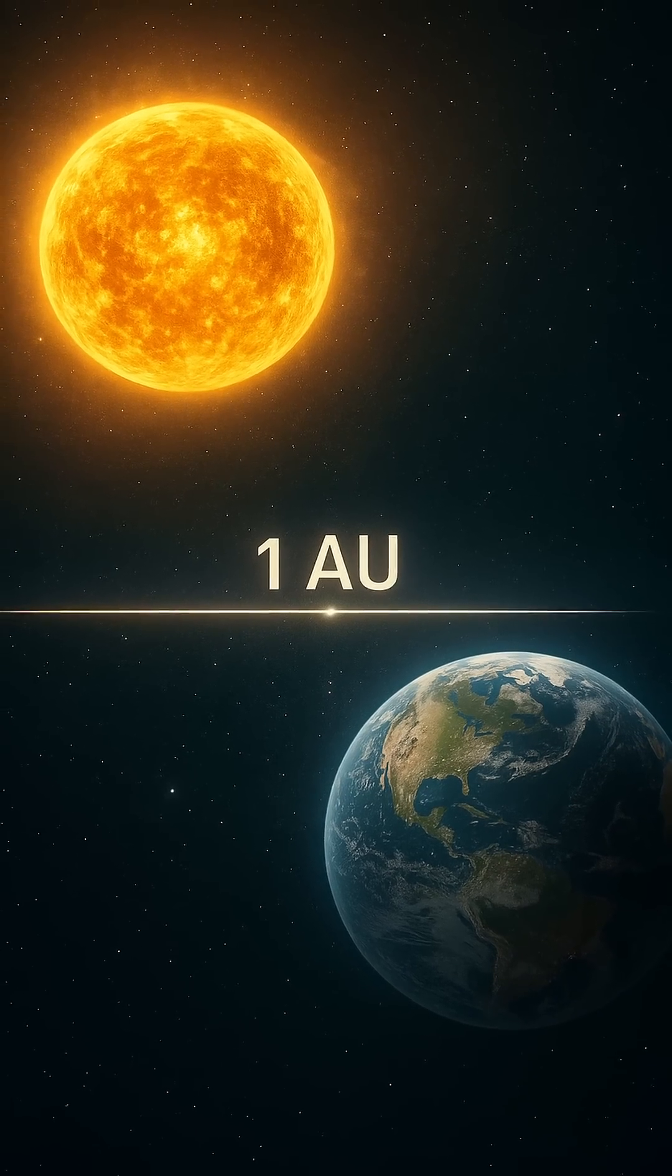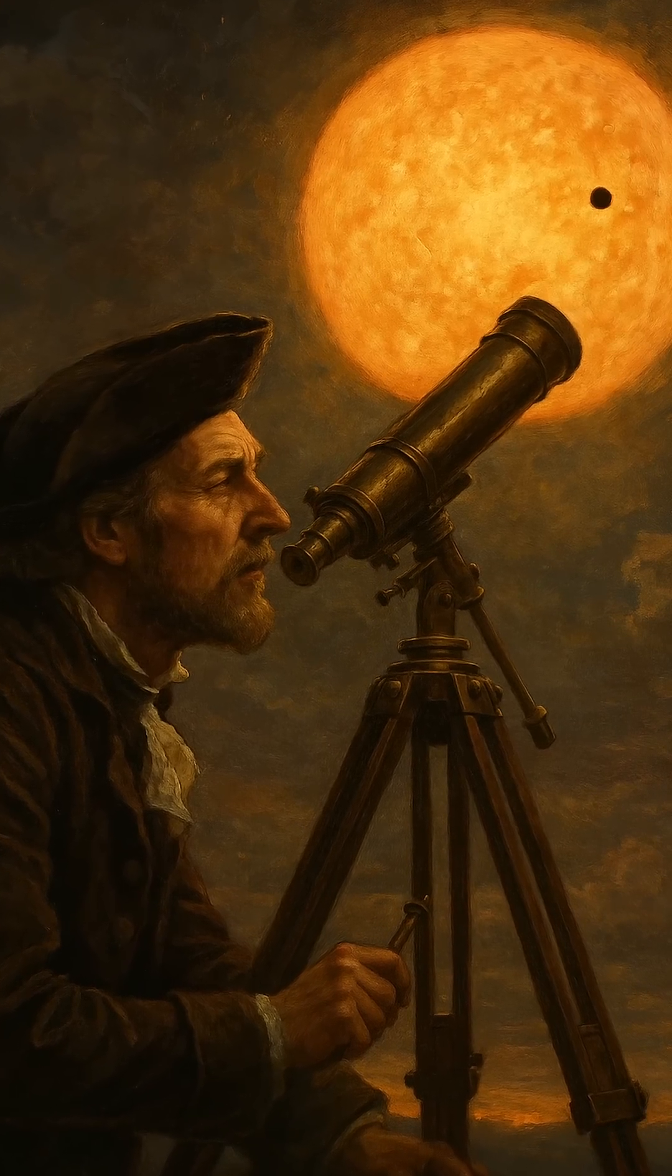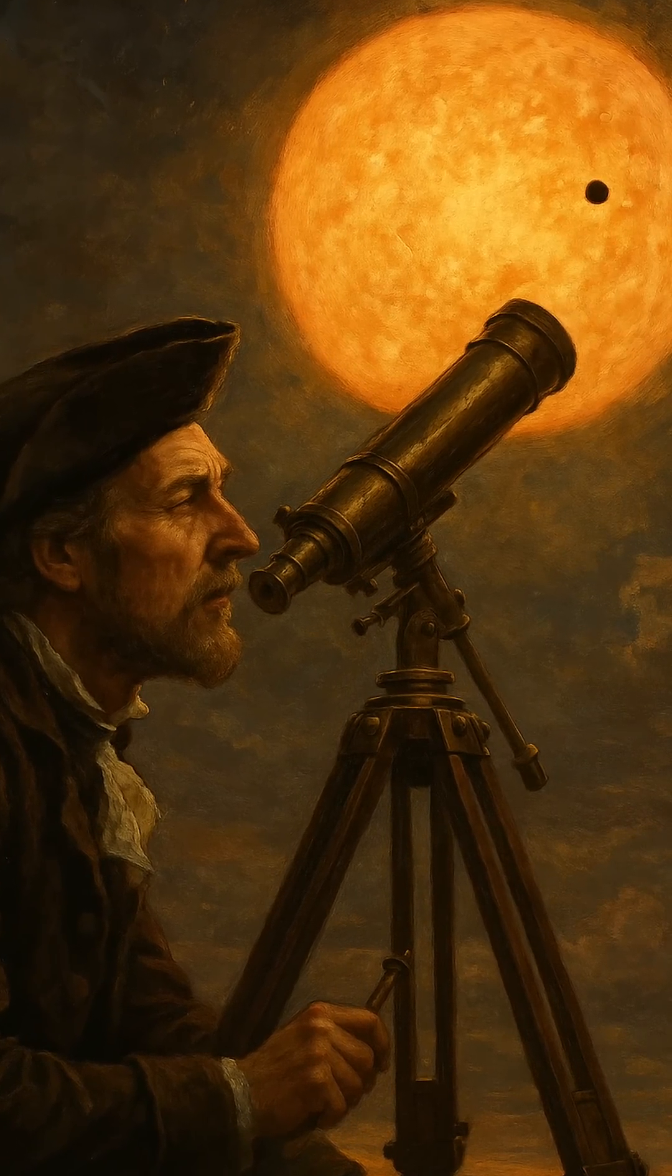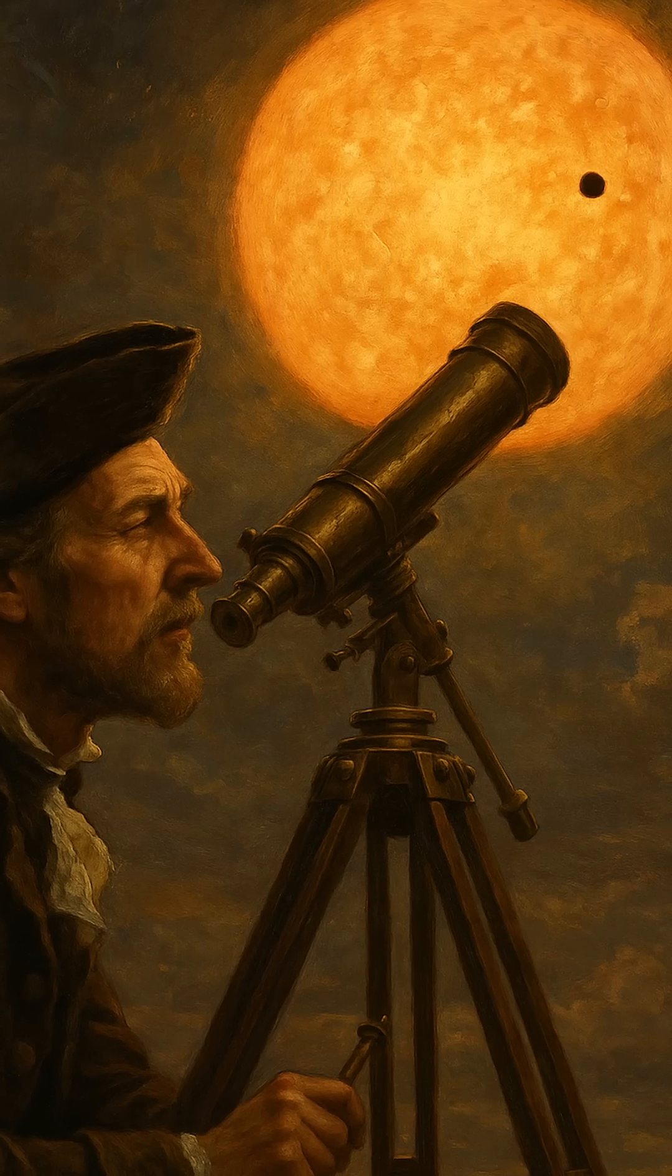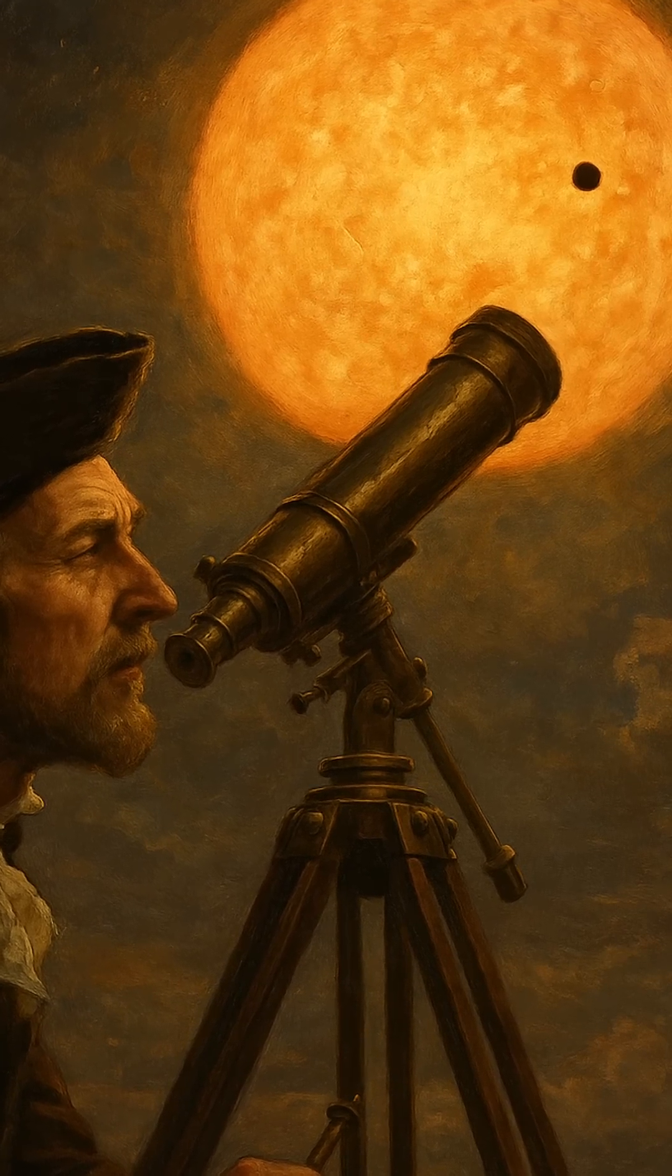At its core, one astronomical unit is the average distance between Earth and the Sun, a value that equals approximately 150 million kilometers, or about 93 million miles.